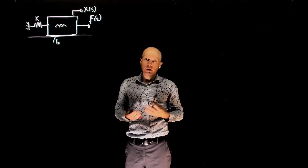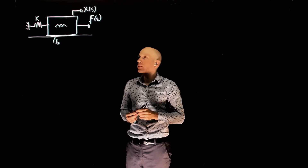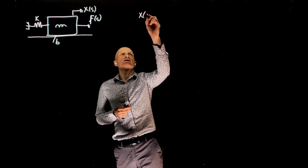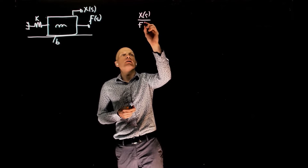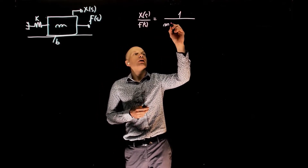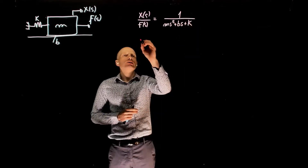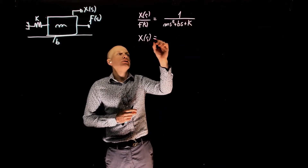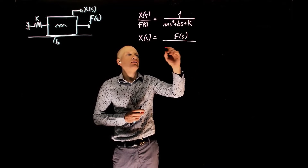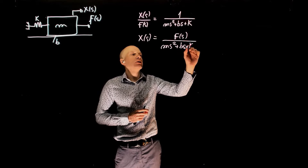We can consider an open and a closed loop approach. Let's start with the open loop. We know that the transfer function — x displacement divided by force — is 1 over ms² + bs + k. So x, the output, is f divided by ms² + bs + k.